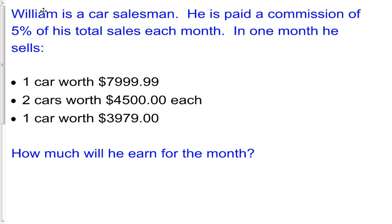William is a car salesman. He is paid a commission of 5% of his total sales each month. In one month he sells one car worth $7,999.99, two cars worth $4,500 each, and one car worth $3,979.